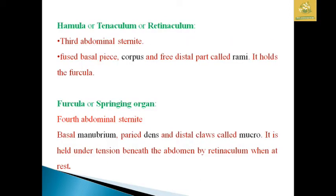The retinaculum or tenaculum, which is found on the third abdominal sternite, has a fused basal piece and corpus and free distal parts called rami which hold the furcula. The furcula, also known as the spring organ, is found on the fourth abdominal sternite with a basal manubrium, a pair of dentes, and a distal claw-like structure called the mucro.